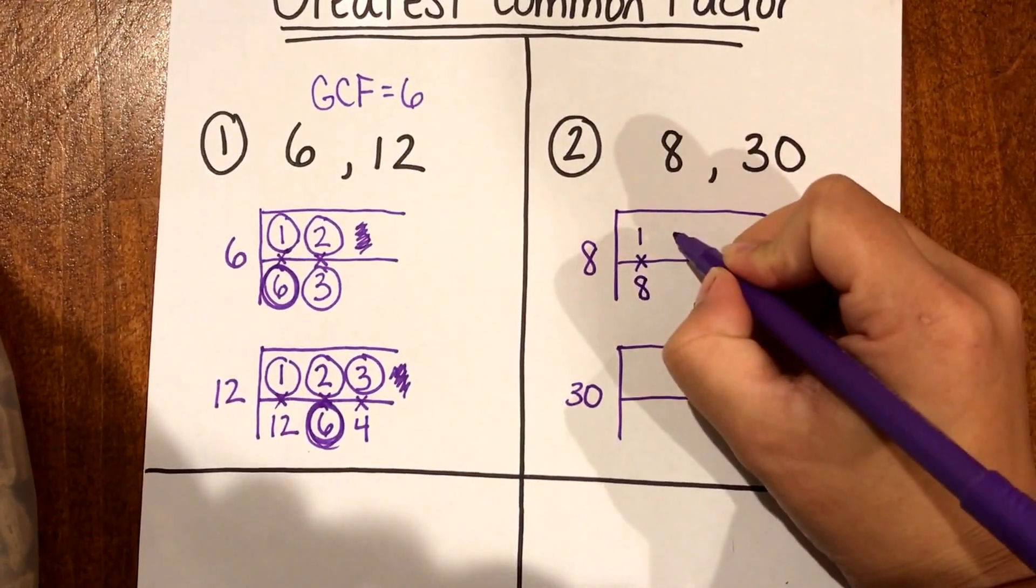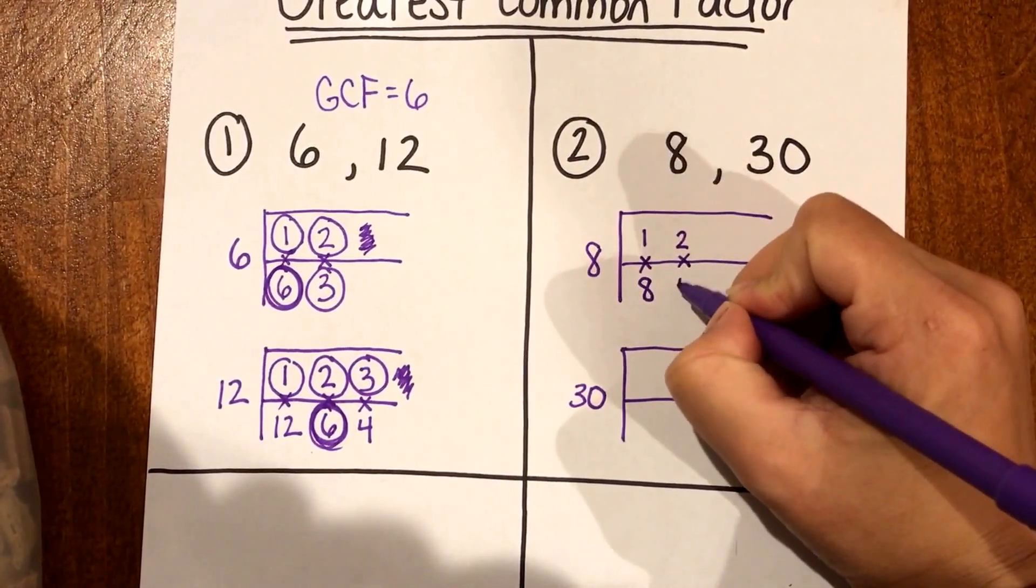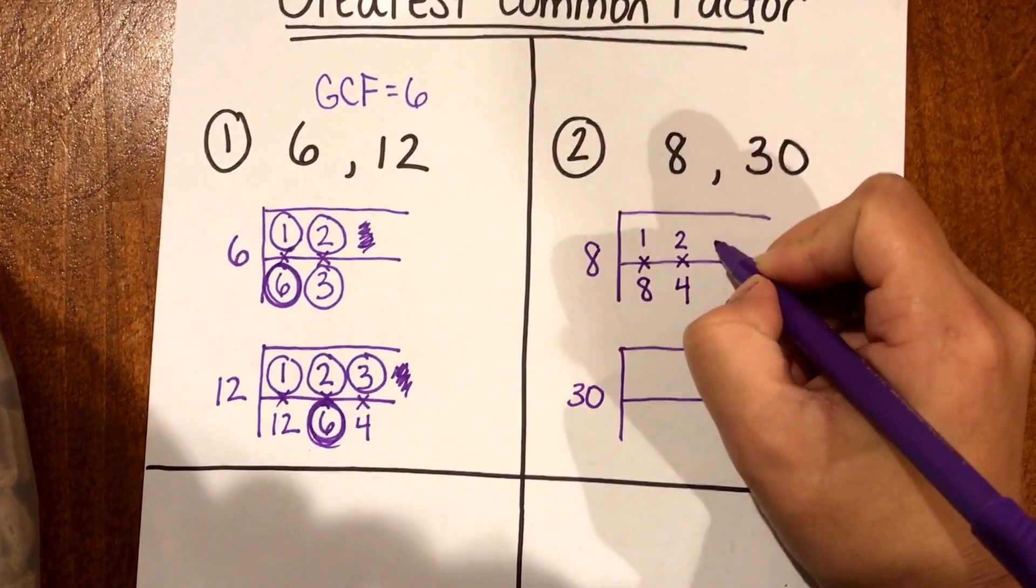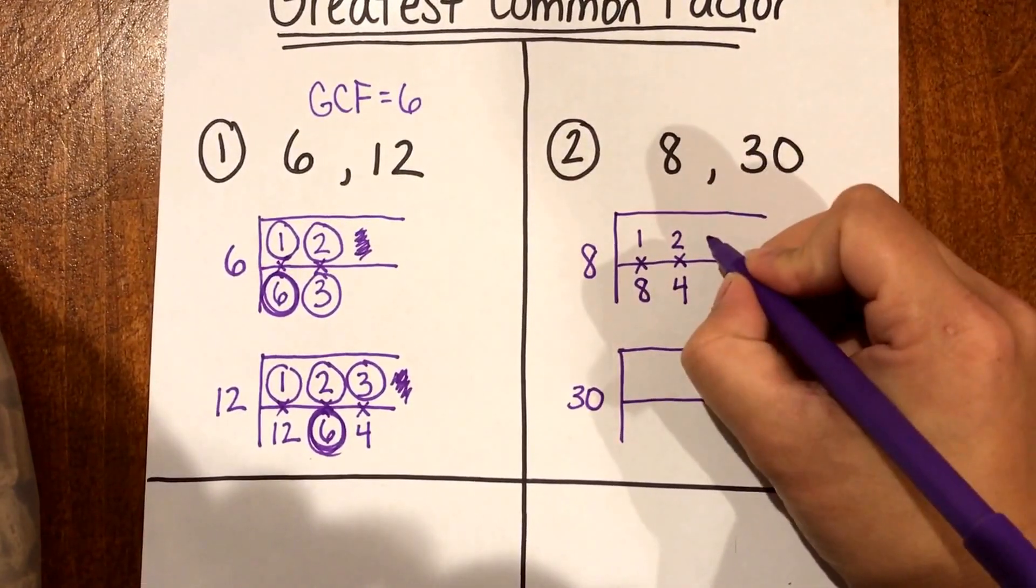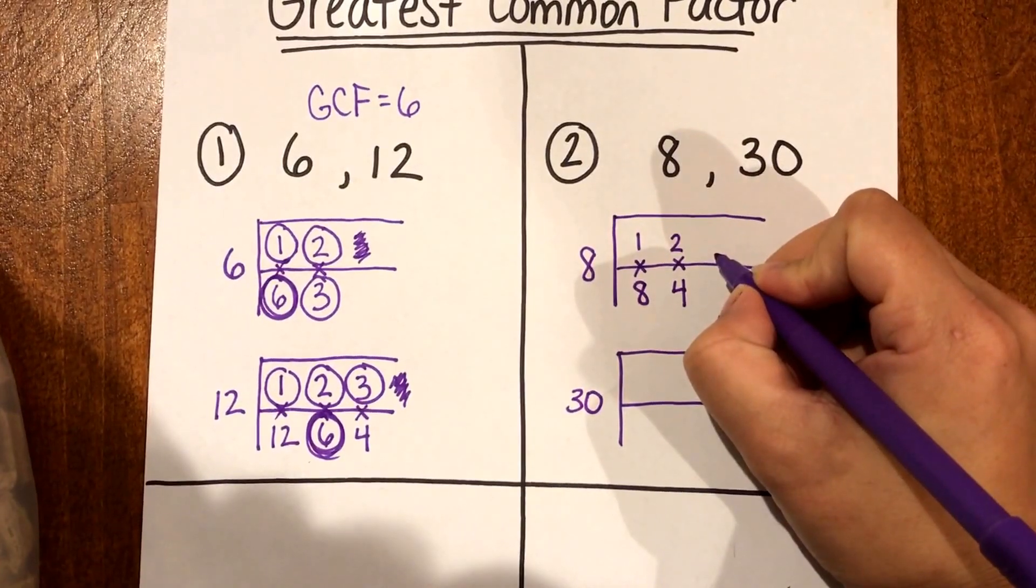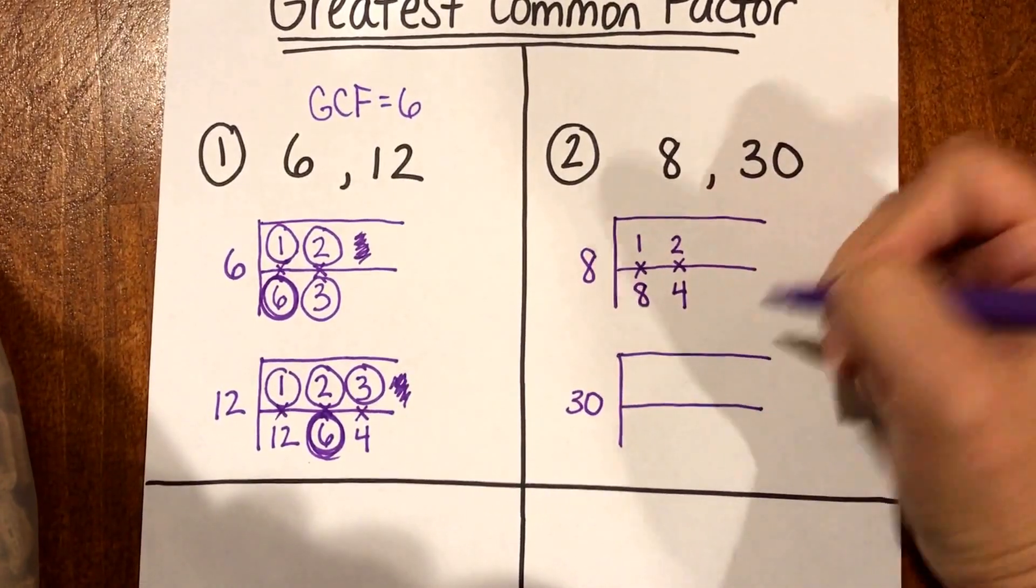So 1 times 8 is 8 and go to 2. 2 times 4 is 8. 3 does not work. 3 times nothing gives me 8 and then if I went to 4 I could do 4 times 2 but I already have 4 so I'm gonna stop.